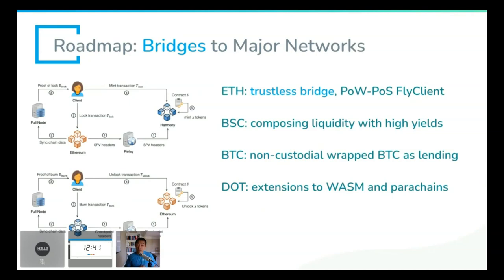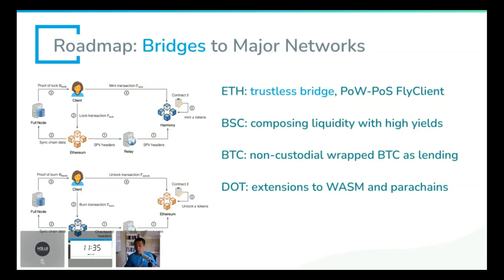This year we already saw many mainnet chains come online since last summer with DeFi applications, but can we bring them together? Can there be a hub that works with all these ecosystems? In the future it's not just about blockchains, but about the world financial infrastructure — can blockchains work with each other first so we can swap assets, compose liquidity, and when there are high yields on Binance Smart Chain, can you use your Ethereum assets to do yield farming? Can flash loans do contract calls across chains? That is our vision.